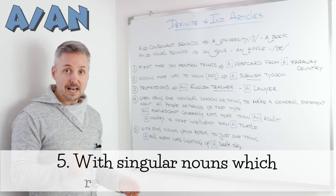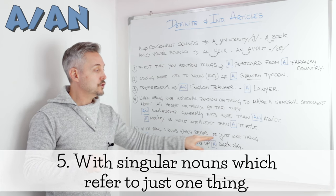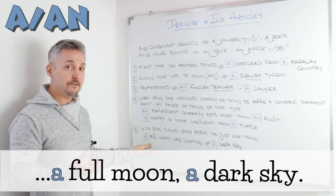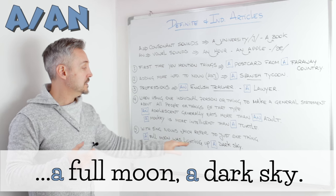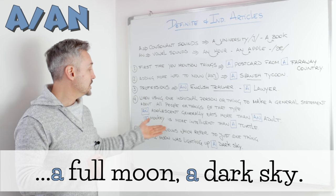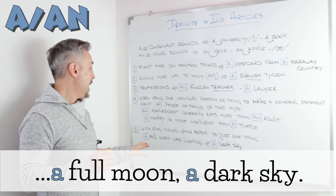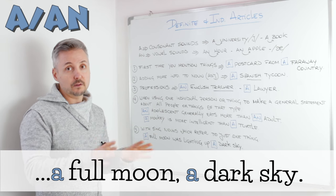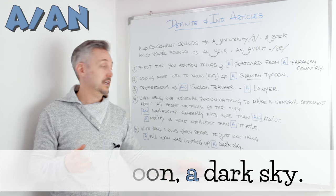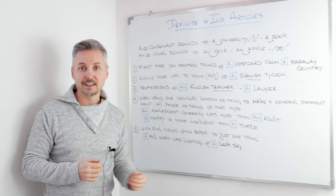The fifth and last rule: with singular nouns which refer to just one thing. For example, 'a full moon was lighting up a dark sky.' Singular nouns — full moon. This specifies only the moon. 'A full moon was lighting up a dark sky' — the sky is only one, and it was dark.